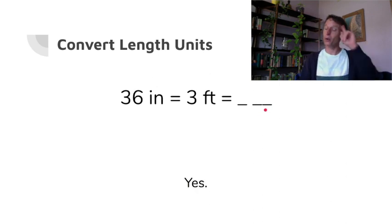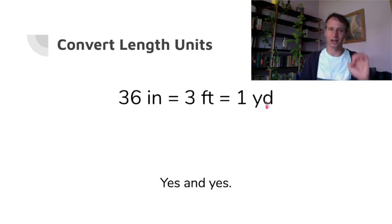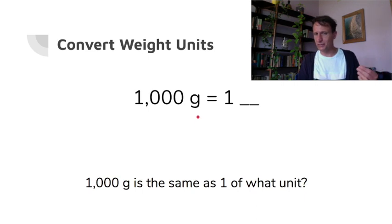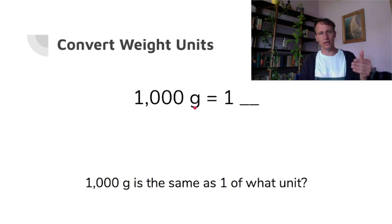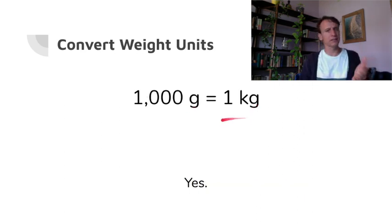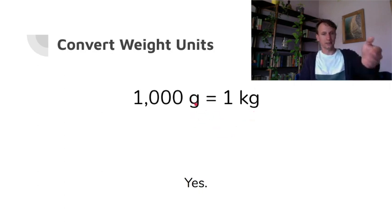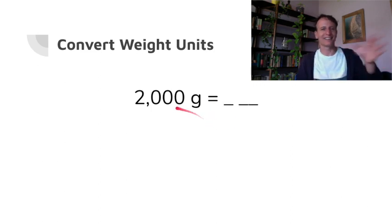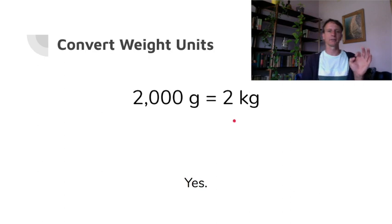Thirty-six inches is three feet, also known as one yard. Now we're moving to weight. In the metric system we'll see grams and kilograms; in the customary system, pounds and ounces. One thousand grams is one kilogram — part of what makes the metric system so user-friendly. If you noticed it's the same concept as meters and kilometers, good. Two thousand grams is two kilograms.